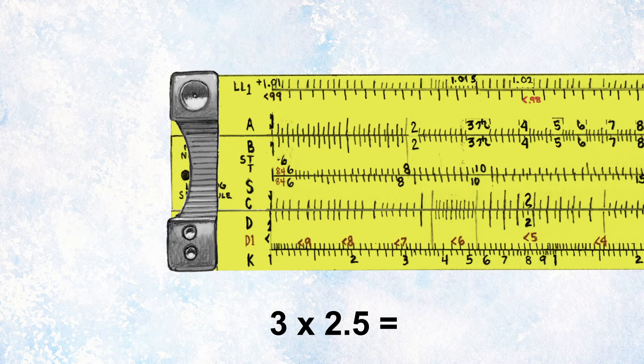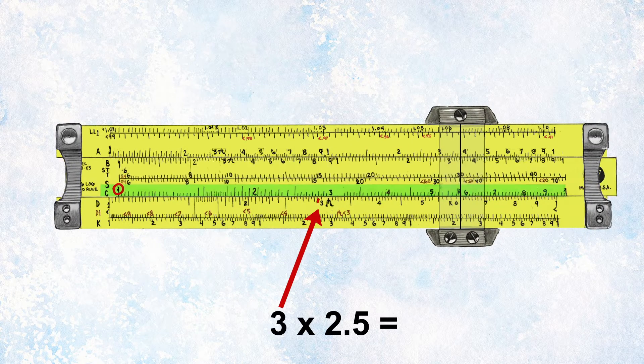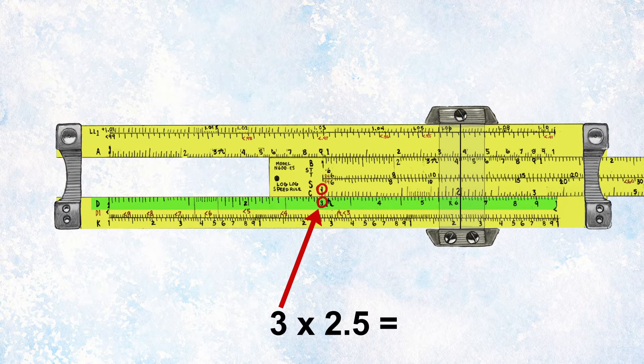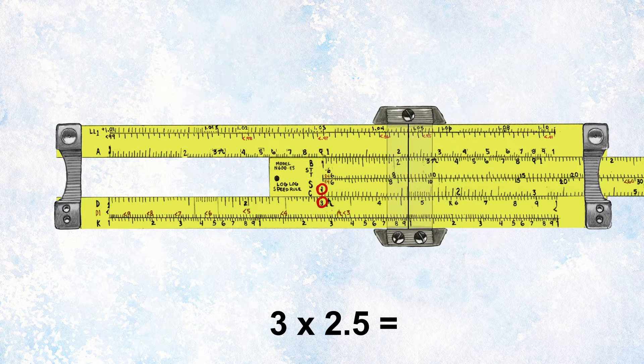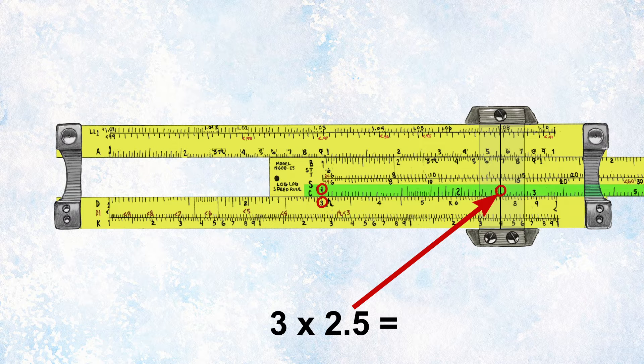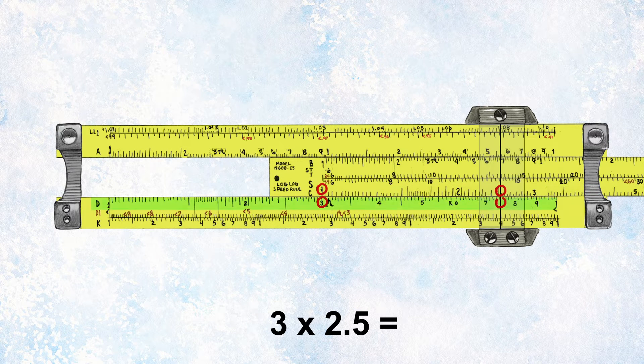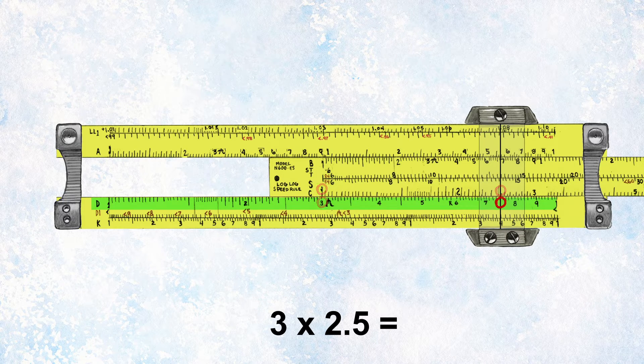If you line up the number one on the C scale with the number three on the D scale, and then you take that sliding cursor and find two and a half on the C scale, the answer is revealed on the corresponding line on the D scale: seven and a half.